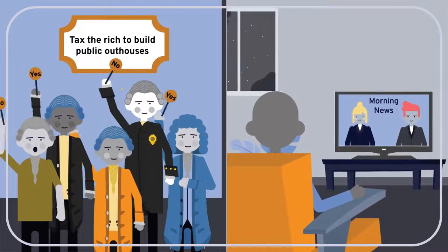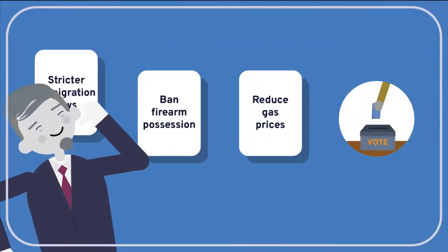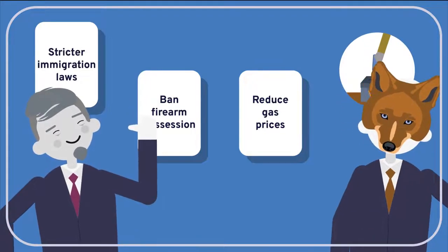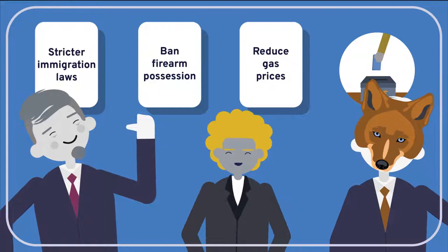In modern democracies, the people's role is much more limited than the citizens' assemblies envisioned by Rousseau. Most democratic citizens rarely, if ever, vote on specific policies. Instead, they vote for representatives who will make complex policy decisions on their behalf.